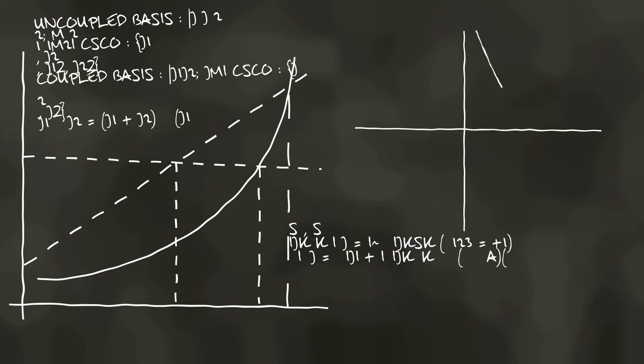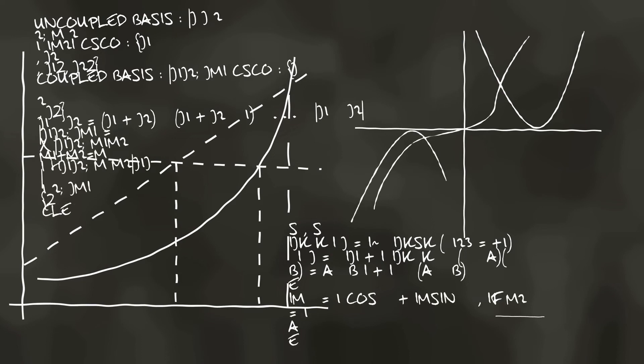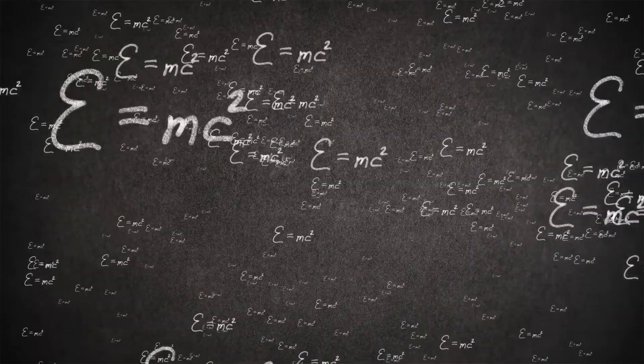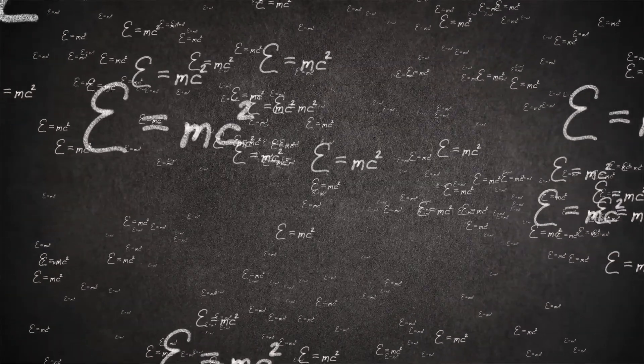First, some definitions. The theory of relativity is a theory that deals with the relationship between space and time. The theory was proposed by Albert Einstein in 1905 and published in his paper on the electrodynamics of moving bodies.